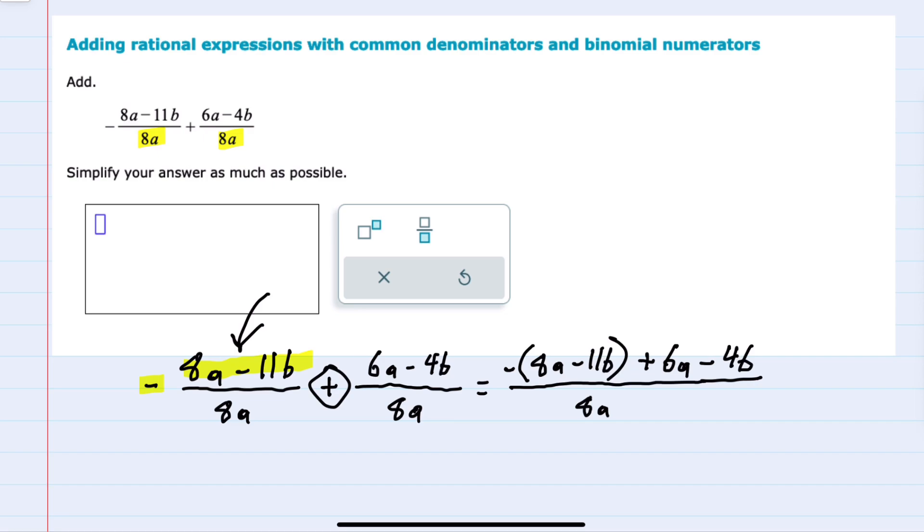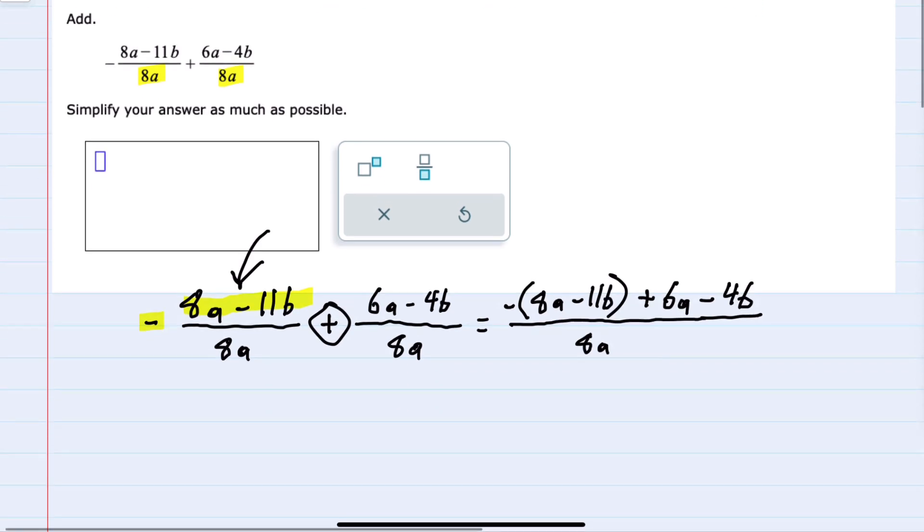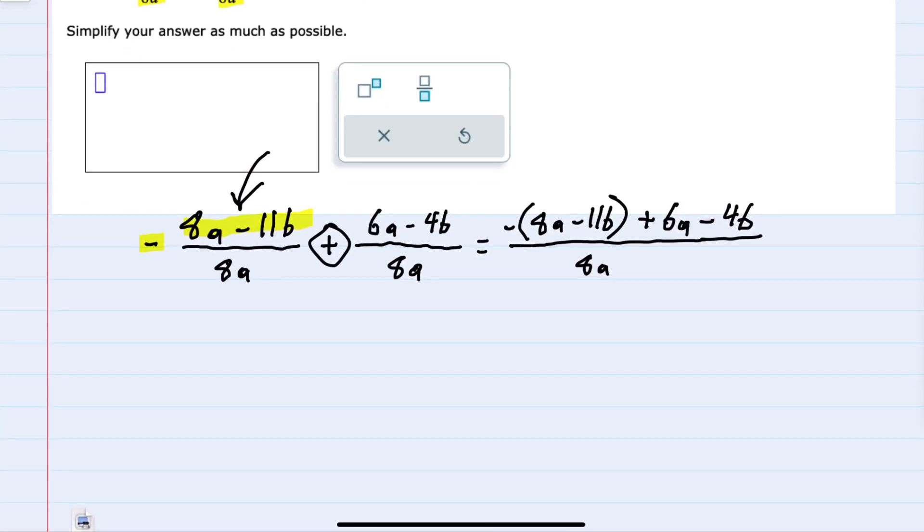So we've combined things here into one fraction. I can then simplify by first distributing that minus to be a negative 8a and then distributing to the second term a plus 11b, bringing down the rest of the expression,